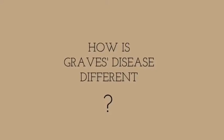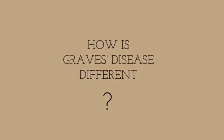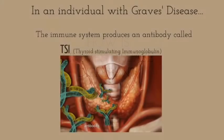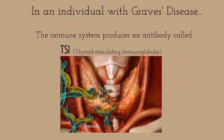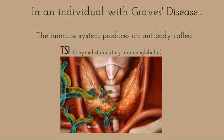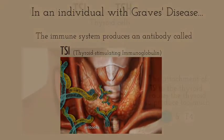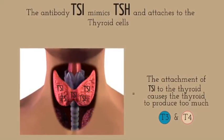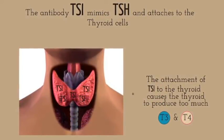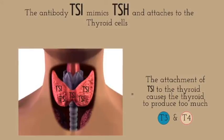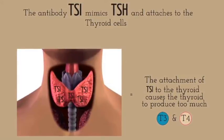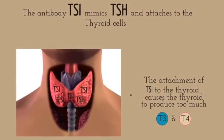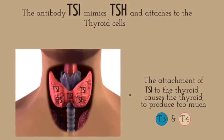How is Graves disease different? In an individual with Graves disease, the immune system produces an antibody called TSI. The antibody TSI mimics TSH and attaches to the thyroid cells. This attachment causes the thyroid to produce too much hormone.